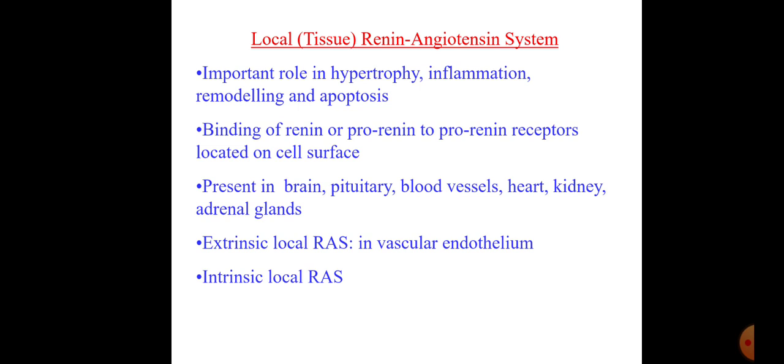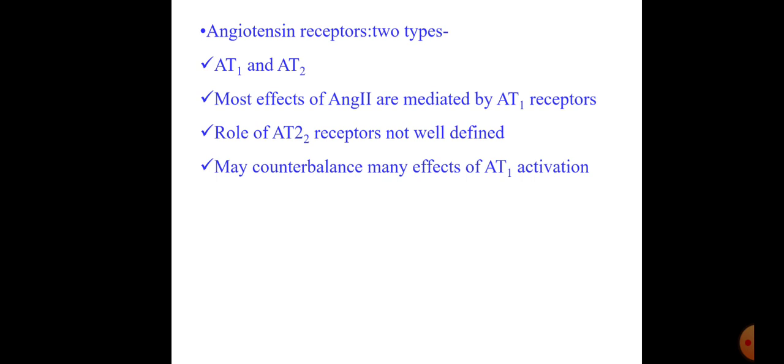Local RAS systems are also proposed, present in the brain, pituitary, blood vessels, heart, kidney, and adrenal glands. These play important roles in hypertrophy, inflammation, and remodeling processes. Binding of renin or pro-renin to pro-renin receptors on cell surfaces is also important. In pathological conditions like hypertension and heart failure, we aim to inhibit both the systemic and local RAS activity.